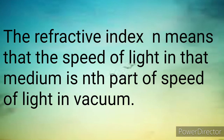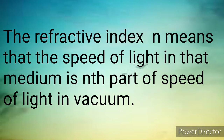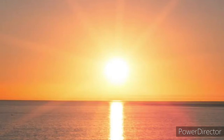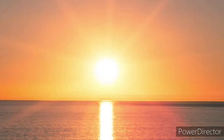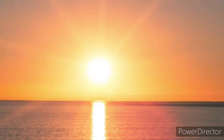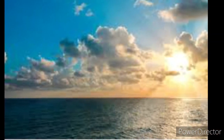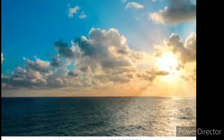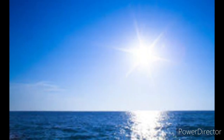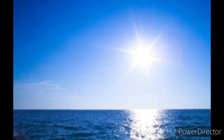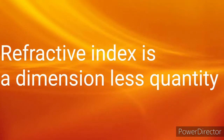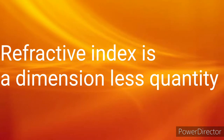The refractive index n means that the speed of light in that medium is the nth part of the speed of light in vacuum. For example, the refractive index of water is 1.33, meaning that light travels 1.33 times as fast in vacuum as in water — compared to water, the speed of light is 1.33 times faster in vacuum. Refractive index is a dimensionless quantity, meaning it has no units, because it is a ratio of the same physical quantities.